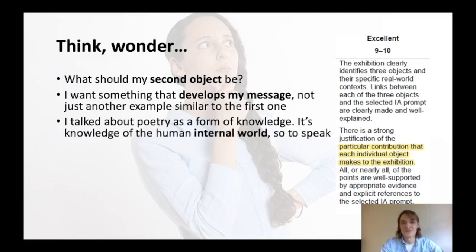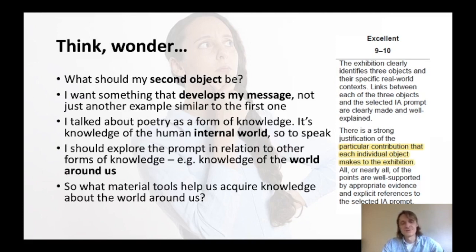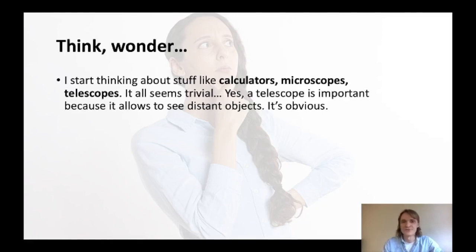I don't want to take the easy way out — I want an object from some other walk of life. What have I talked about so far? Poetry as a form of knowledge — knowledge of our internal world, the human soul. How about looking at some other forms of knowledge, such as knowledge of the world around us, the external world? With that in mind, I ask what material tools help us acquire knowledge about the world around us. Things like calculators, microscopes, or telescopes come to mind. I can argue that a telescope enhances our biological senses, but that seems like a trivial, obvious point — so I try to go further and think about the biggest, most complicated tools of knowledge production ever made.